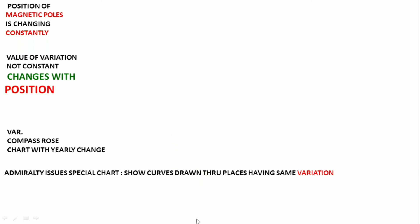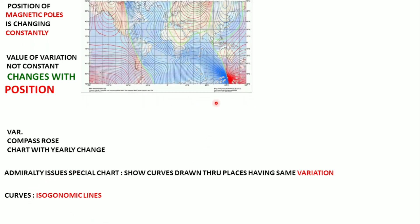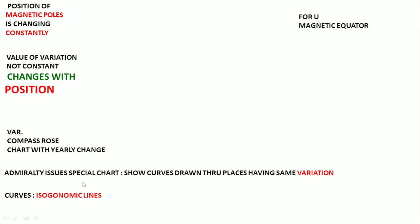The Admiralty also issues charts that show variations joined by curves of equal variation. These curves are called isogonic lines. This is not the proper chart, but you will see that the charts are made like this — curves joining places with the same variation. So some charts are issued by the Admiralty which you can consult to know your variation. The important thing to remember: variation changes with position.